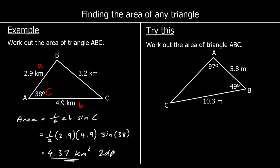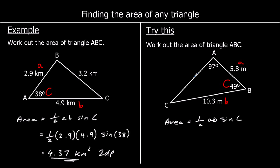One for you to try — pause the video and have a go. We're looking for two lengths and an angle between them. The angle 49 is going to be our big C, and 5.8 and 10.3 are going to be A and B. We don't need the 57 or the 97 — we just need two lengths and an angle between them.